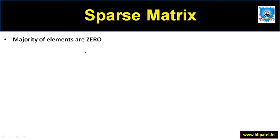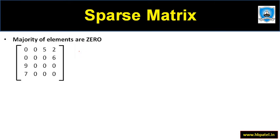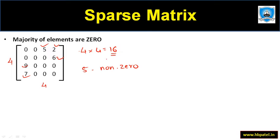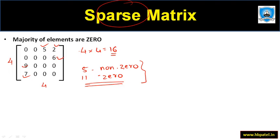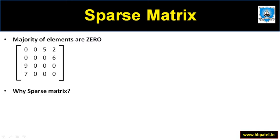Let us take an example. Say this is a 4×4 matrix — there are four rows and four columns, so total 16 elements. Out of 16, only five are non-zero elements, which means 11 are zero. So the majority of elements are zero. In this case we can use sparse matrix because more than half of the elements are zero.